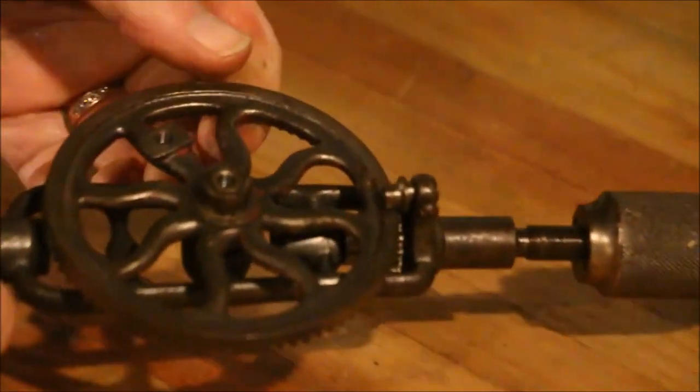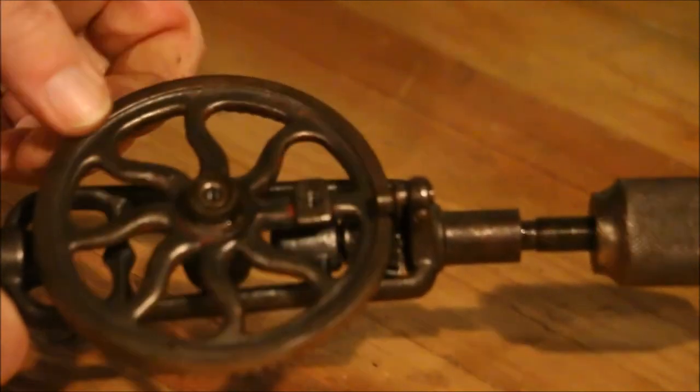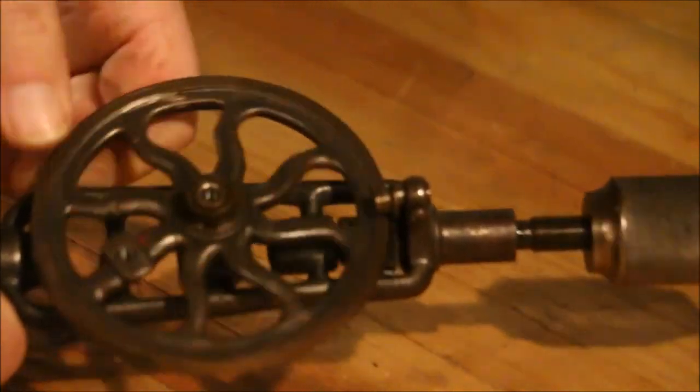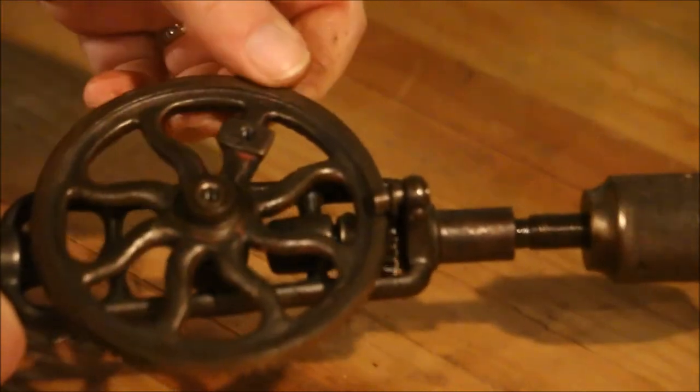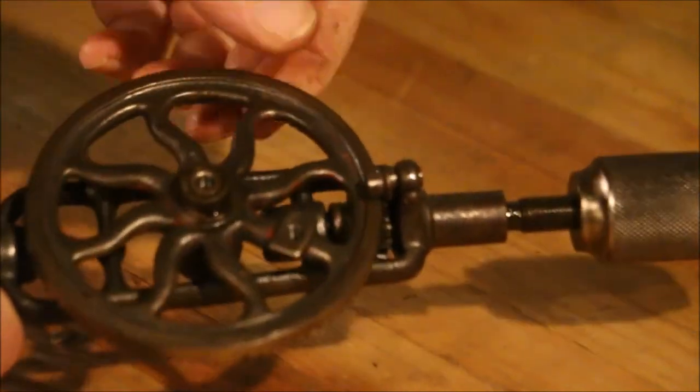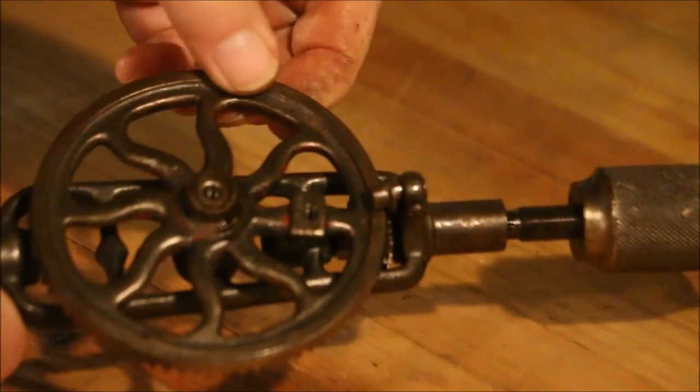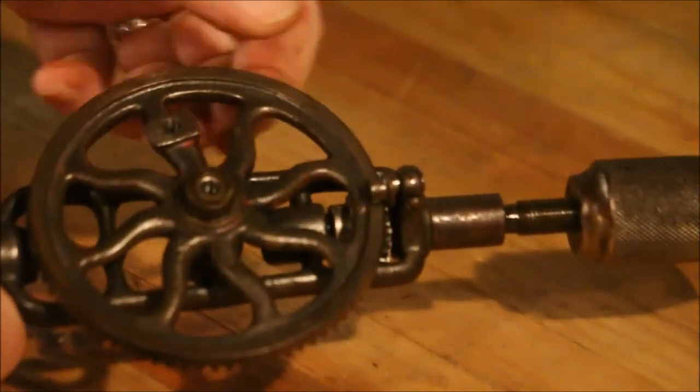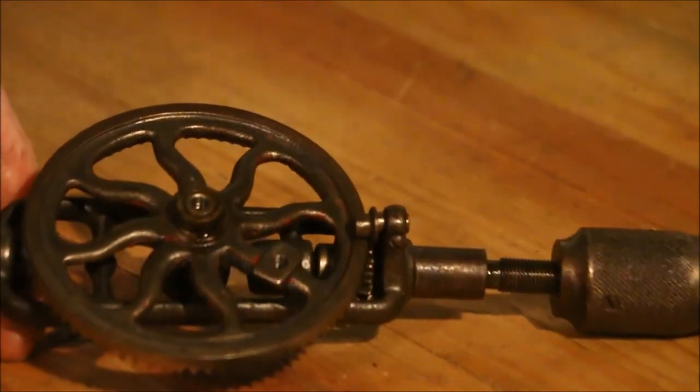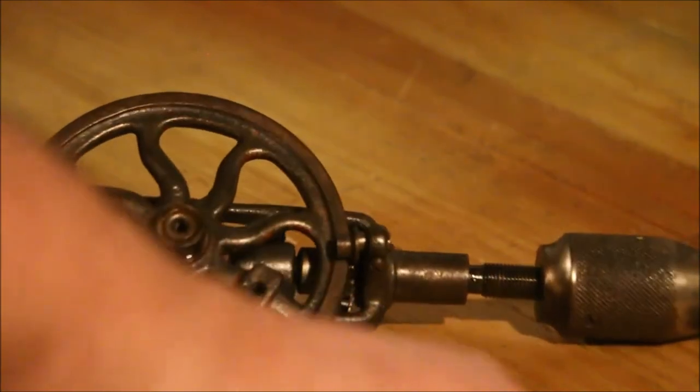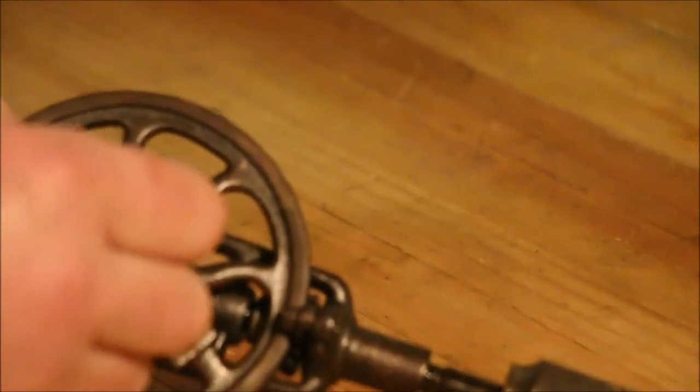There we go. Now the wheel is turning. That means that it's engaging the gear. Now I can go ahead and put the screw back in to put the bull gear on.